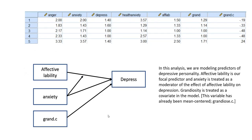The model that we are going to be running is going to look like this. Here you can see a screenshot of just a subset of our data. We're going to be looking at the predictive relationship between affective lability and depression, and then testing whether that effect of affective lability on depression may be moderated by anxiety. We also have a variable being included as a covariate, and that's going to be grandiosity. So the predictors in our regression model will include affective lability and anxiety, as well as the interaction between those two variables, plus the covariate grandiosity. The grandiosity variable has been mean centered before inclusion into our model.